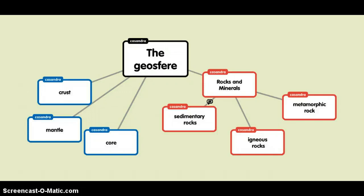The geosphere is made up of three layers. The crust is the hard outer layer. The mantle is the hard middle layer. And the core is the hard inner layer.